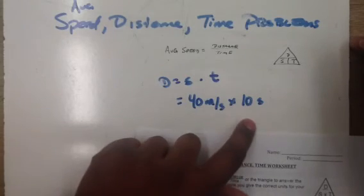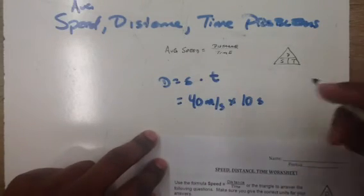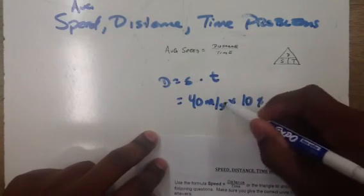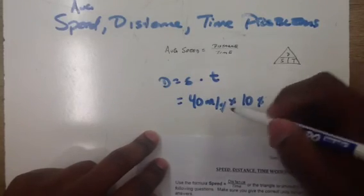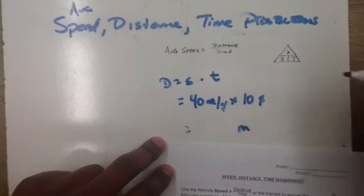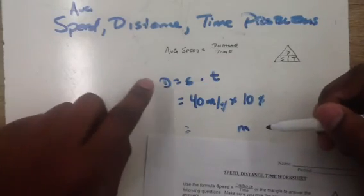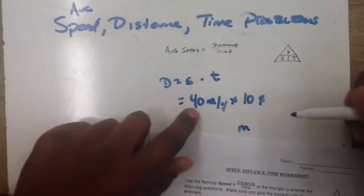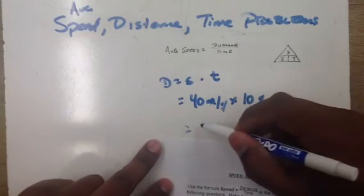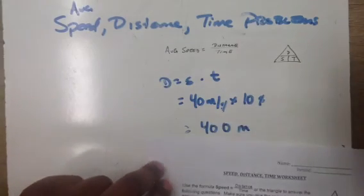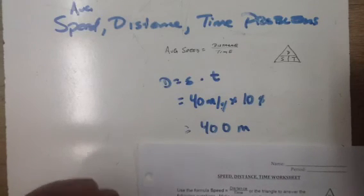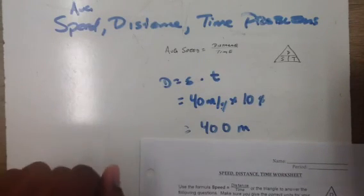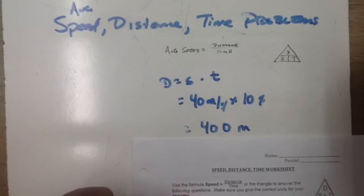So we got 40 times 10. In this case, our seconds are going to cancel out because seconds are underneath here. And our answer is going to be left in meters, which makes sense because we're looking for distance. And 40 times 10 is 400. So I think you get the hang of it. A little bit of practice, you'll be getting it in no time and the better you'll get at it. Happy studying.